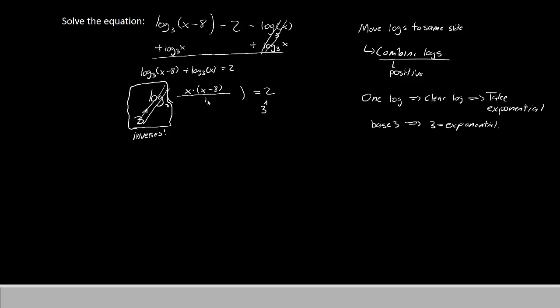Which means you can cancel them both out. There's also no need to write the over 1 underneath the fraction because dividing by 1 doesn't do anything. So all we have left on the left side is x times x minus 8 equals, on the right side, 3 to the second power.